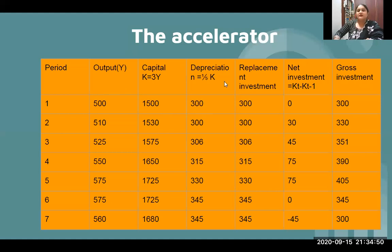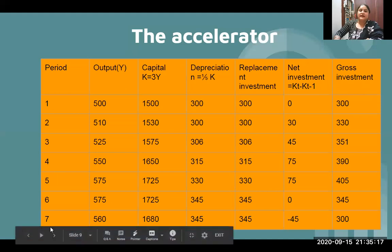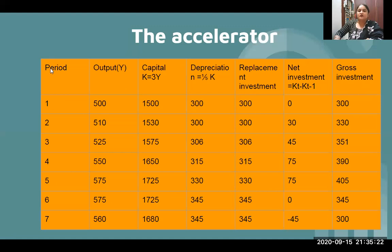Then comes replacement investment — what we invest to replace what has depreciated. Net investment is capital in time period T minus capital in time period T minus 1. And the last column is gross investment. There are seven time periods, so seven rows of data. The first row elements have been explained.